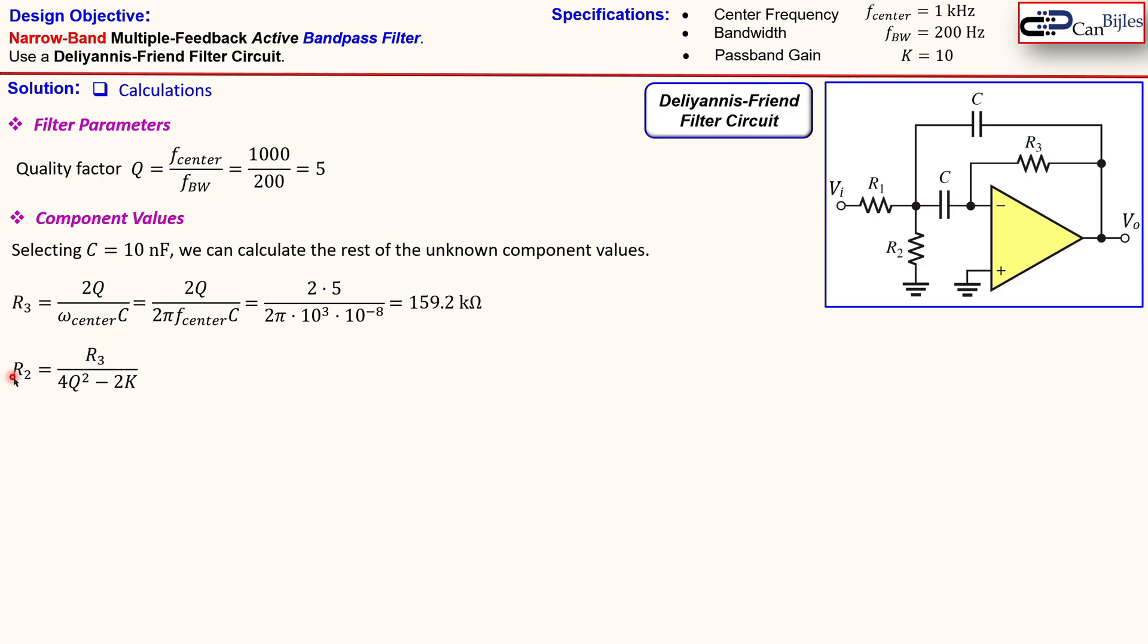Now we can go to the R2 which is then using this R3 from this step and also the quality factor and our passband gain which is this 10. Okay now substitute here the values you get here almost 2 kilo ohm or more precisely 1989 ohm. Now the final one is R1 which is then R3 over 2K and that is then given by this expression. Again we need to use this R3 and the passband gain and that will result in almost 8 kilo ohm or more precisely 7958 ohm.